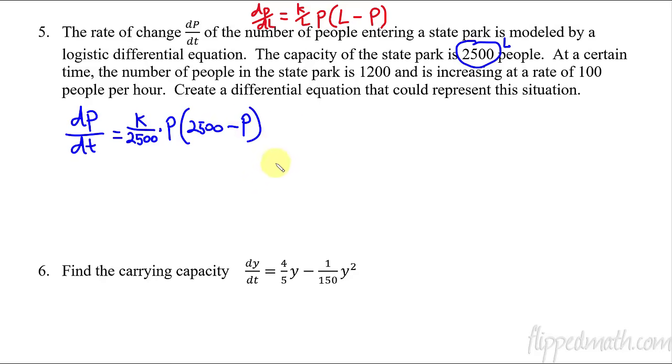So this is my formula. Now, what else do I know? I know that the p is, the number of people in the state park is 1,200. So that p is right there. That's a p if the rate is 100. So that's a rate of change, my dp dt. So because it's people per hour. So now I can start setting this up. So I have 100 is my rate of change. k, I don't know yet. I still know that it's 2,500 on bottom. And then when the rate is 100, we have 1,200 people in the park. So times 1,200. And then 2,500 minus, again, the p was 1,200. Now, this just lets us solve for k. So we just do all the arithmetic here and solve for k.